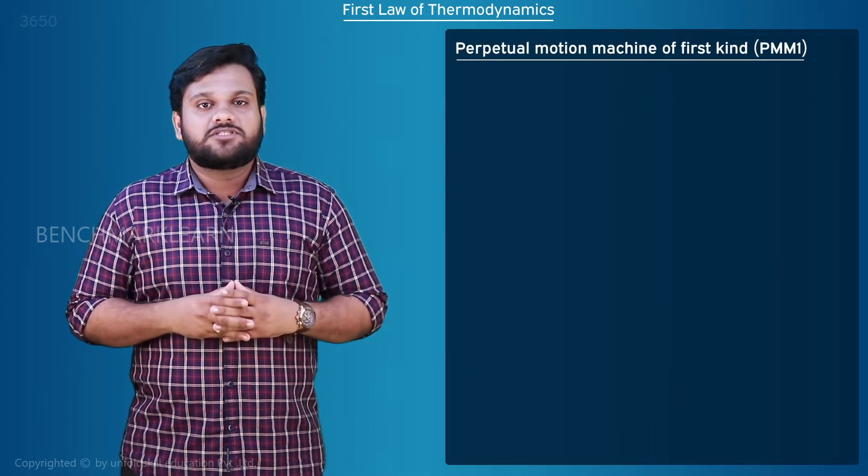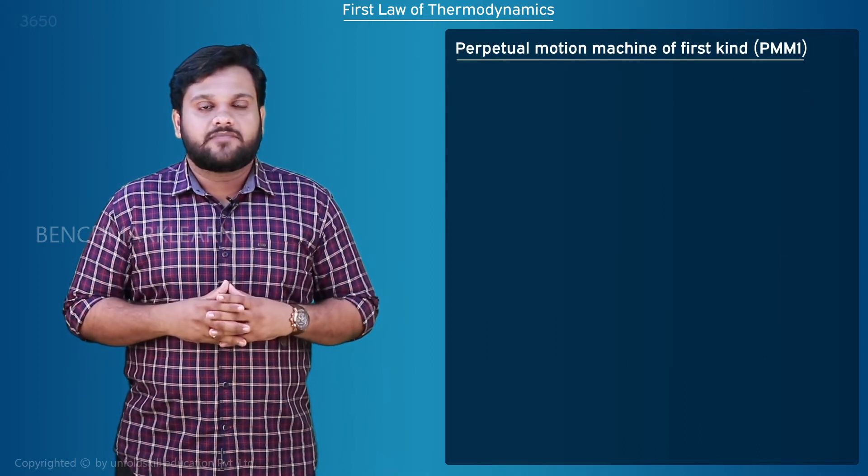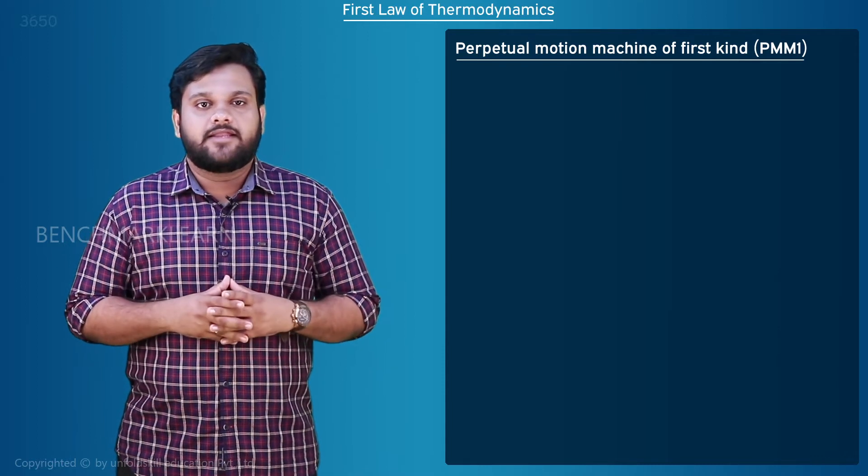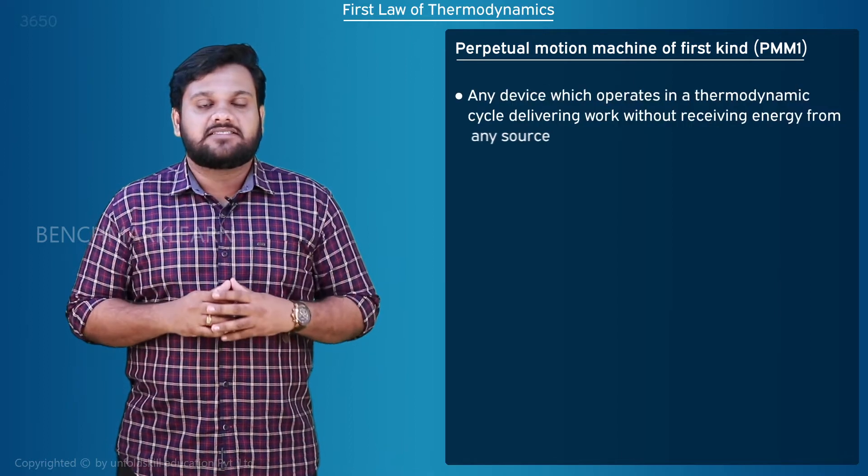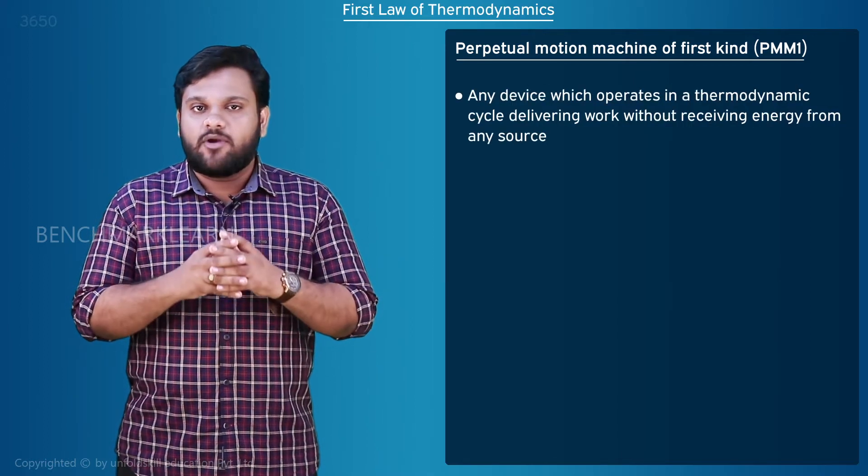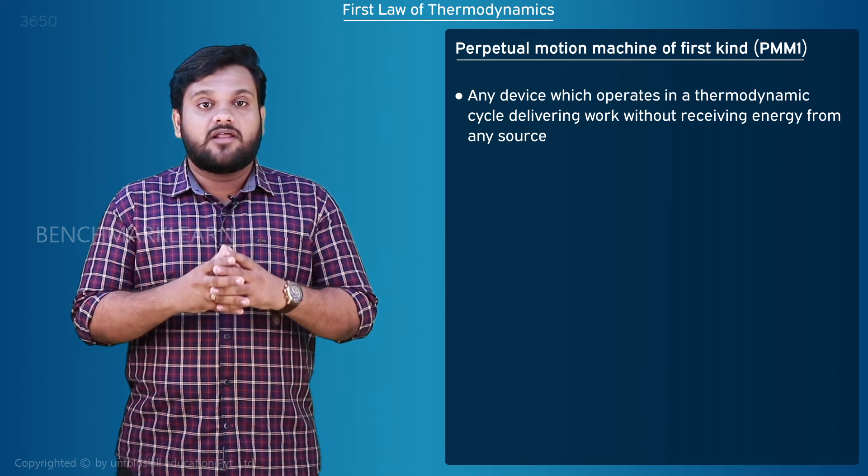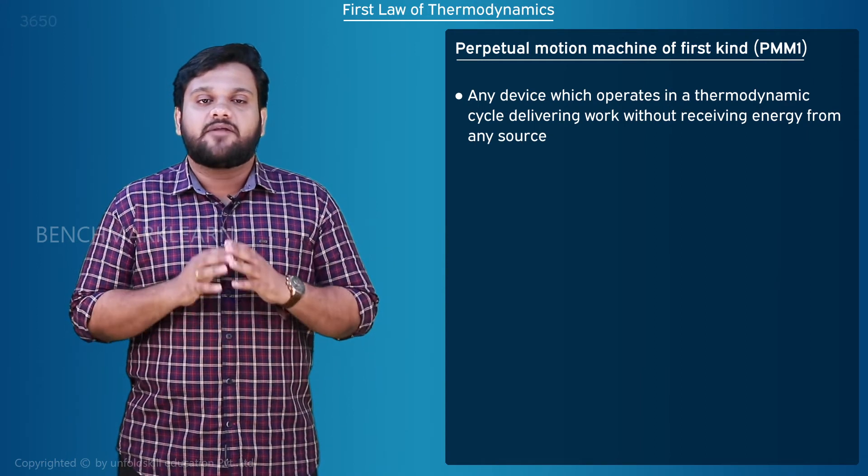Perpetual motion machine of the first kind, denoted by PMM1, is any device which operates in a thermodynamic cycle, delivering work without receiving energy from any source.